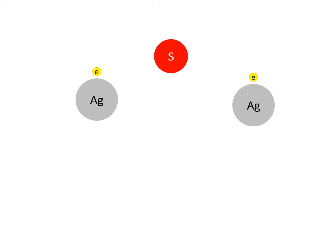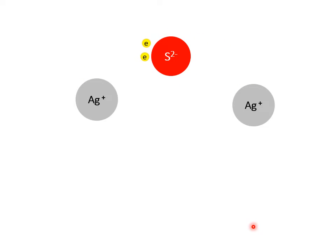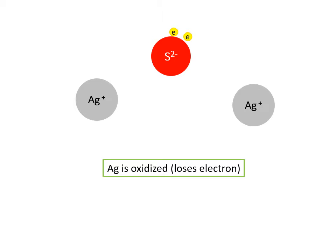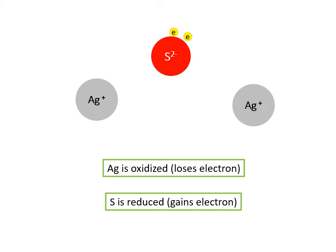Here's a diagram to show it. We have a sulfur and two silvers. The electrons that belong to the silver are going to be transferred to the sulfur, making it a sulfide. The S becomes 2− because it gained two electrons, and each of the silvers becomes 1+ because they lost an electron each. So this is an oxidation-reduction reaction — the silver was oxidized because it lost electrons, and the sulfur is reduced because it gained electrons.